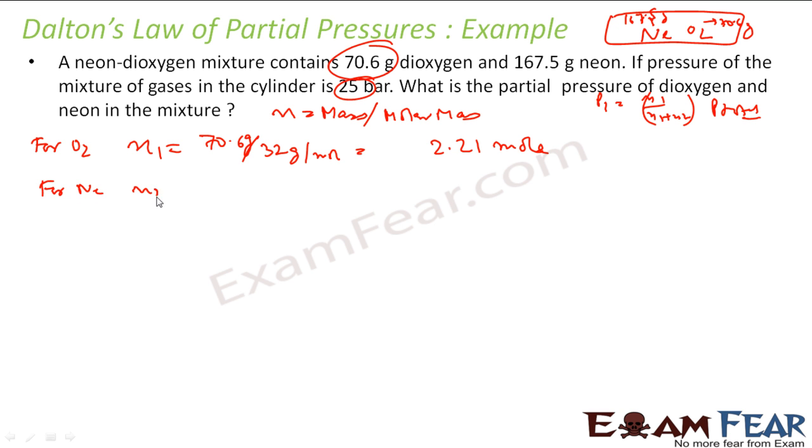For neon, my n will be what? The mass of neon, 167.5 grams, divided by the molar mass of neon will be 20 grams per mole. So if you divide this, grams cancel, and if you divide this, you get 8.375 mole. So we have got the value of n1 and n2.